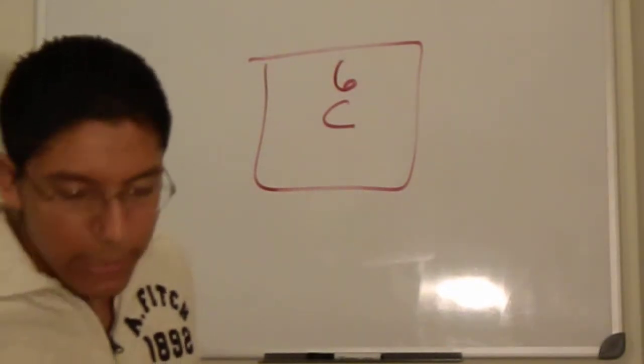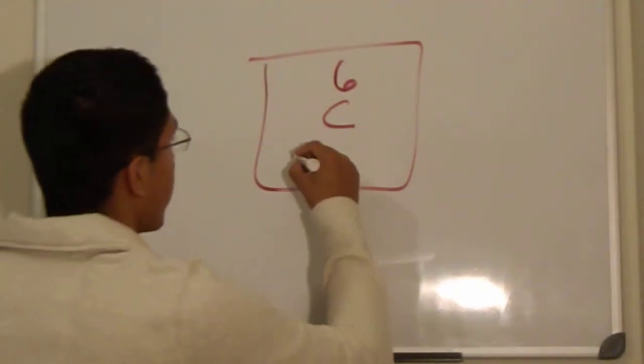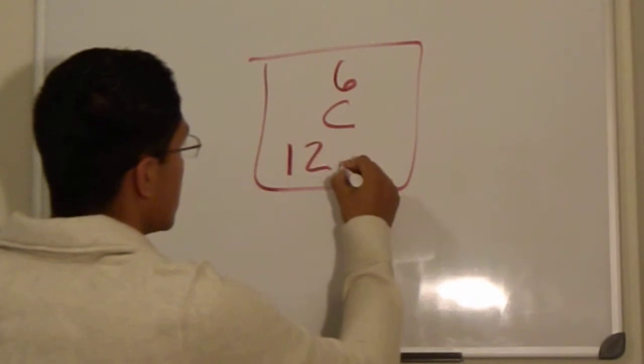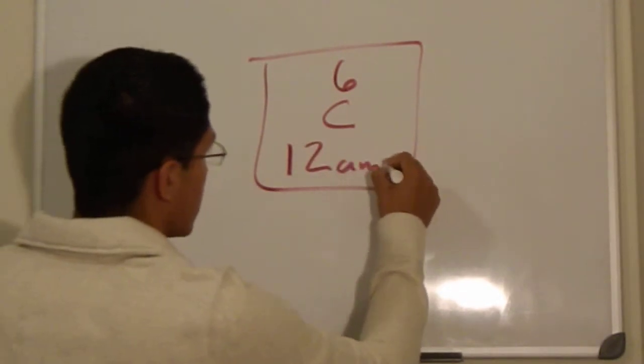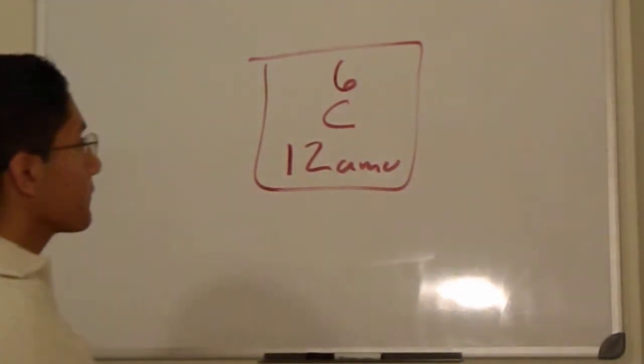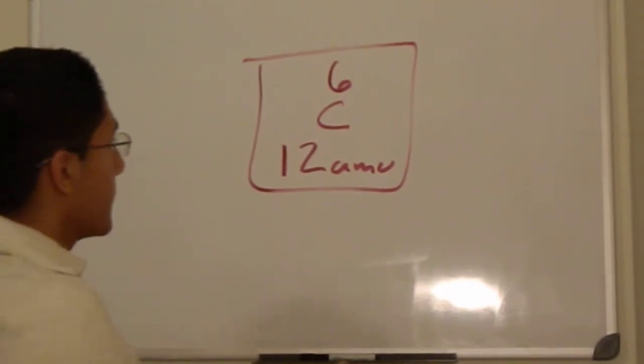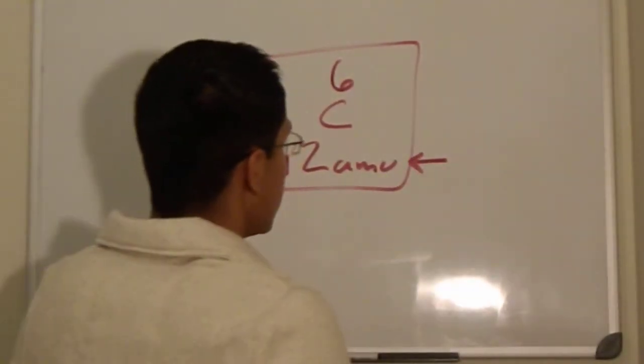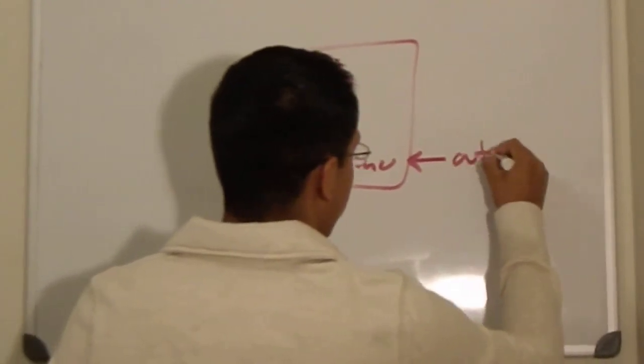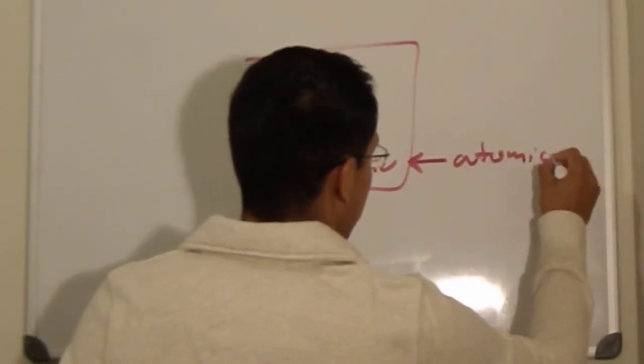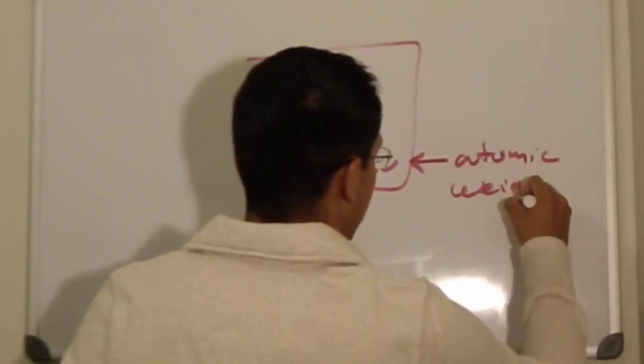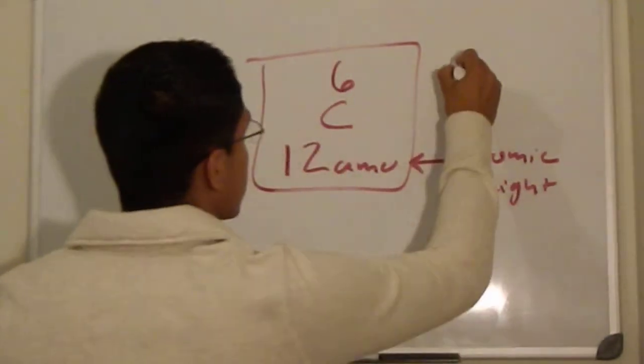Above it is the number, what number is carbon? Is it six? Yeah, I'm pretty sure it's number six. And it is about 12 amu. Okay, now this number here is the atomic weight.